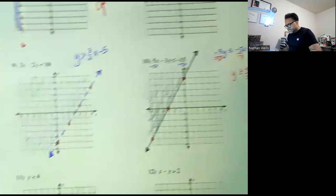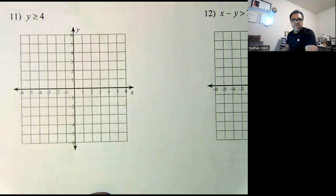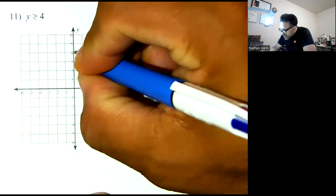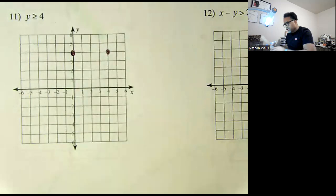Let's take a look at 11. Y is greater than or equal to 4. So on the y-axis, choose two values for y. I always choose the y-intercept at 4, and I choose another one where y is also equal to 4. It's equal to 4 when x is 4 and y is 4.